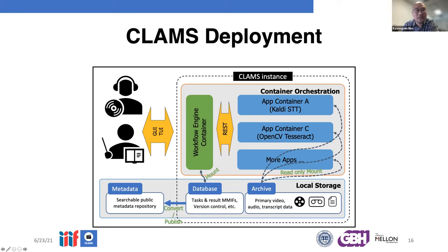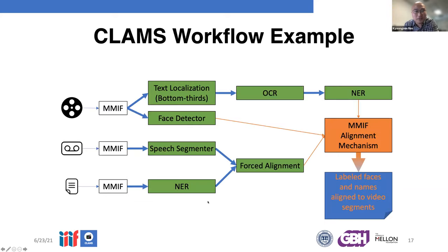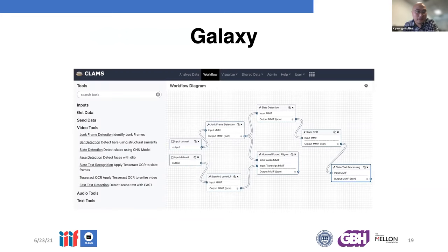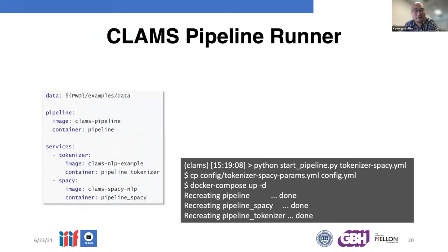This is a screenshot of the Galaxy GUI used to pipe different CLAMS tools together to generate a custom workflow. And this is an example of the terminal-based pipeline engine. On the left we have a simple configuration file, and on the right we can simply start the Python script and run it in the background.